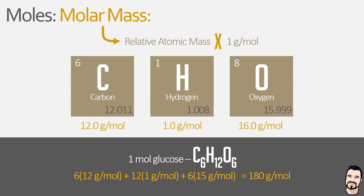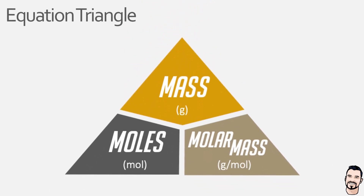There is an interesting interplay between moles, molar mass, and the mass of something, allowing us to create an equation triangle. Using two known values we can determine a third unknown. To calculate mass in grams, multiply the number of moles by the molar mass. To calculate the number of moles, divide the mass by the molar mass. To find the molar mass, divide the mass by the number of moles. We'll look at each of these in turn using specific examples.